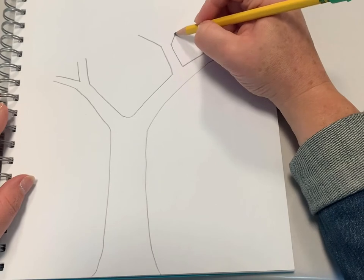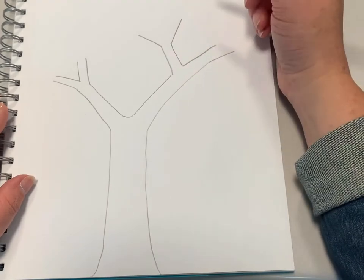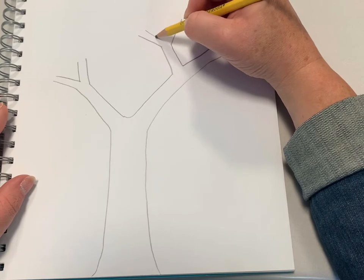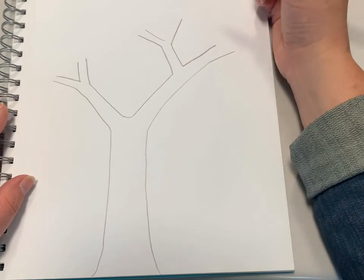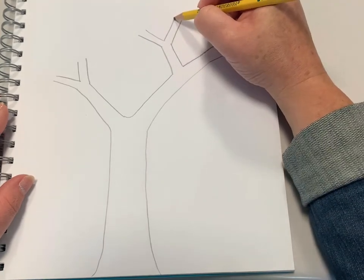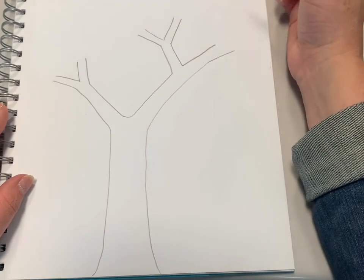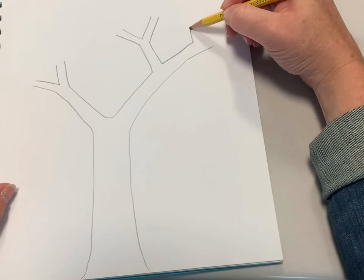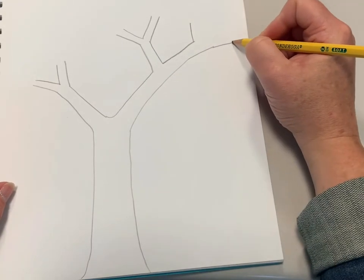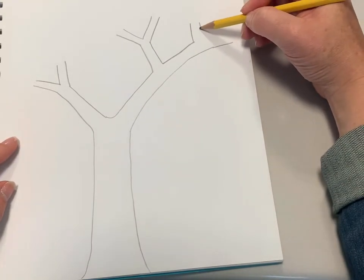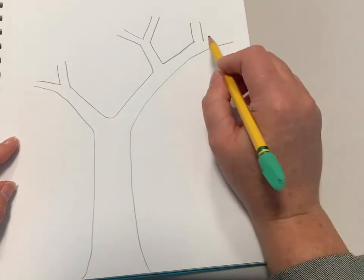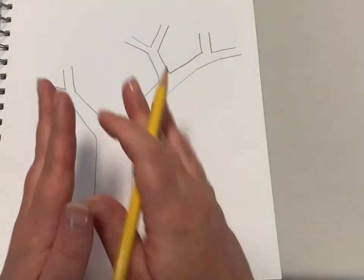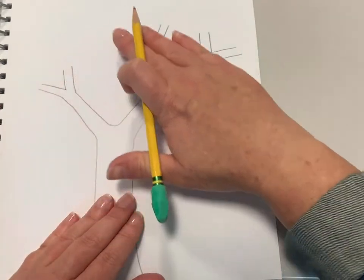And we're going to add another copycat line at the end. Now as your branches get taller, the rule is that they're going to get thinner and longer. So we're going to spread out this branch, add the copycat line, and it gives you a whole bunch of new branches to work with: one, two, three, four, five, six branches.